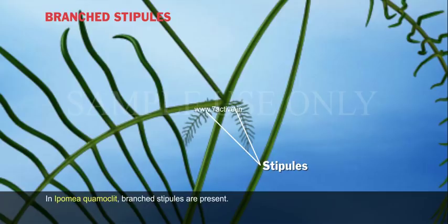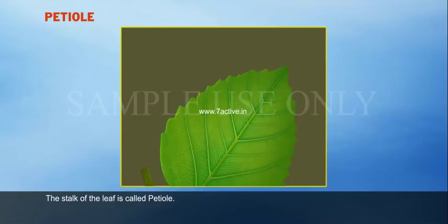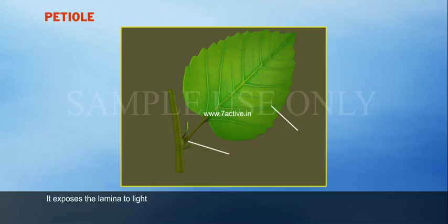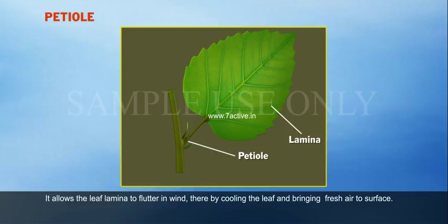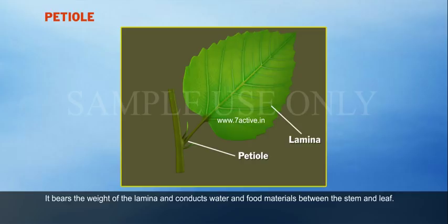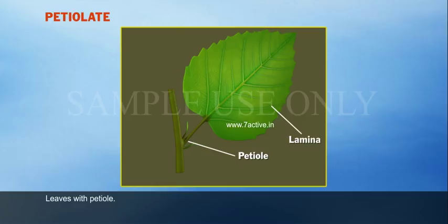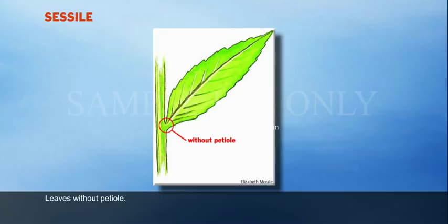Petiole: the stalk of the leaf is called petiole. It connects the lamina to the stem. It exposes the lamina to light. It allows the leaf lamina to flutter in wind, thereby cooling the leaf and bringing fresh air to the surface. It bears the weight of the lamina and conducts water and food materials between the stem and leaf. Petiolate: leaves with petiole. Sessile: leaves without petiole.